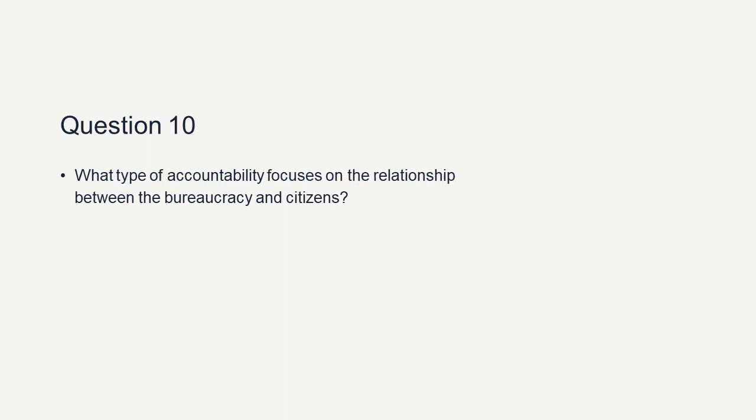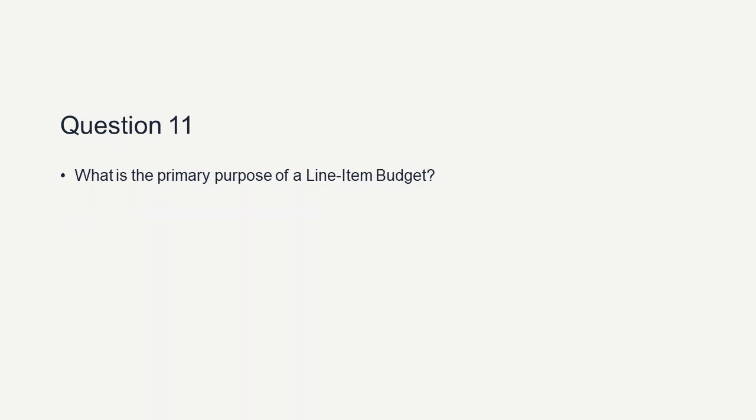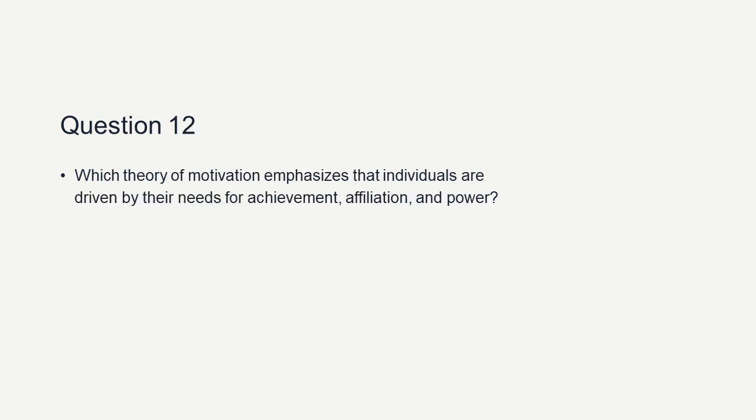Question 9: What type of accountability focuses on the relationship between the bureaucracy and citizens? Administrative accountability. Question 10: What is the primary purpose of a line-item budget? Focus on inputs.